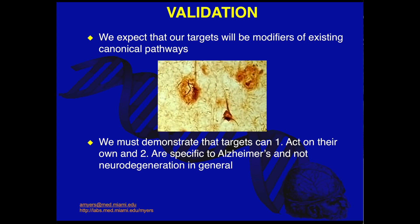After key drivers are predicted, it is important to validate those predictions. We chose two cell lines that overexpress the canonical known pathogenic proteins involved in Alzheimer's disease: extra-neuronal A-beta and intra-neuronal tau. Our hypothesis is that risk factors will be modifiers of known pathways. Establishing a validation pipeline in this manner allows for both the determination of specificity and effect — we need to be sure that the key drivers act specifically on known Alzheimer's pathways and not neurodegeneration in general.